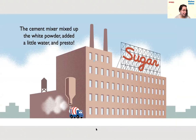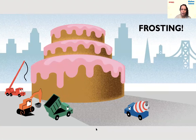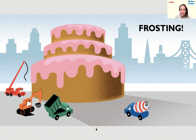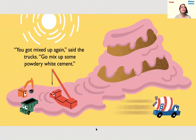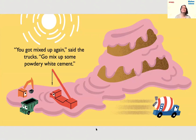He's at a different building this time — not going to get flour. But this building says 'sugar.' The cement mixer mixed up the white powder, added a little water — and presto, frosting! He still got white powder and water, but again the wrong powder. This time he made delicious frosting. Nobody looks happy about this, and what happened to our cake in the picture? It's starting to melt in the sun — it's too hot!